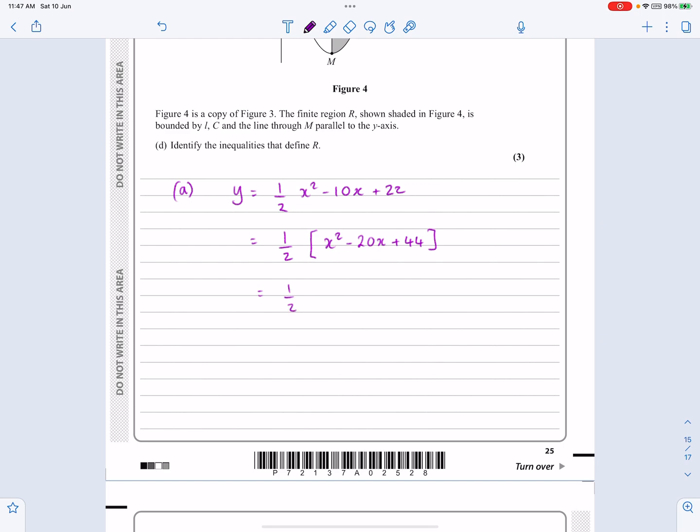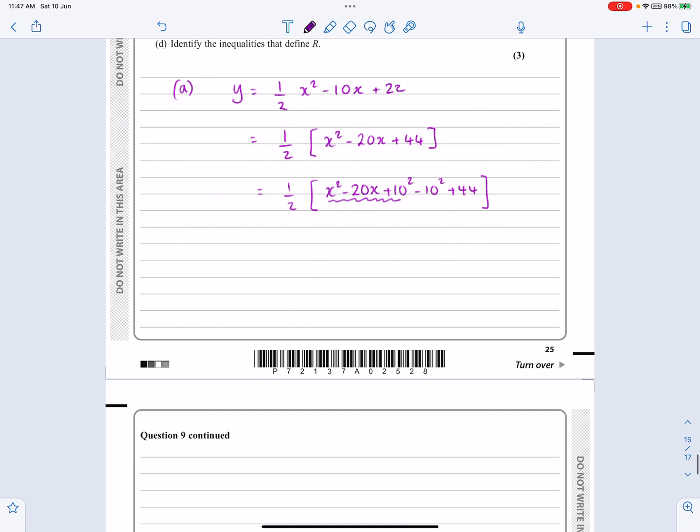As I say, what I do is to say, right, x squared minus 20x. And it's at this point I add on the 10 squared. I take away the 10 squared plus 44. And the whole point of my method is that that then already is a complete square. So that's a half (x minus 10) squared. And then you just have to tidy up the rest of it, which in this case is minus 100 plus 44 is minus 56.